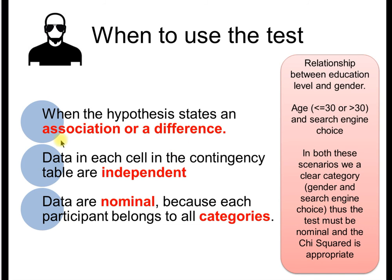Association is a word for relationship. It's the one we use when we're talking about chi-squared, interestingly enough. An association between hair color and personality or extroversion could be an association. Or a difference between hair color, blondes, brunettes, and extroversion, high and low. Data in each cell in the contingency table is independent. So you cannot be both a blonde and a brunette. And the data are nominal.